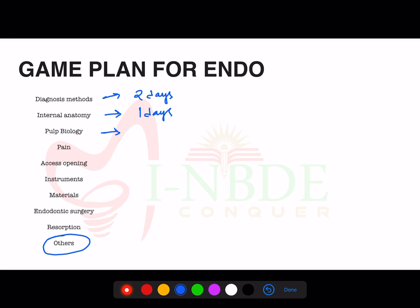When talking about pulp biology, we'll cover all the cells, the nature of the pulp, the nerves, cells, and vessels present in the pulp — and I'm going to allocate one day for that. Pain is internally related to the nerves, so it's going to be part of pulp biology. Access opening is internally related to internal anatomy; I'll talk about important instruments used in access opening and the shapes of access openings for different teeth — that will be one day.